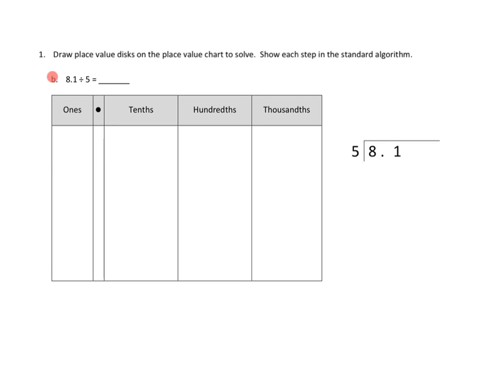We're asked to calculate the following: 8 and 1 tenth, or 8.1, divided by 5. So the first thing we can do is we can plot out what 8.1 looks like on our place value chart.